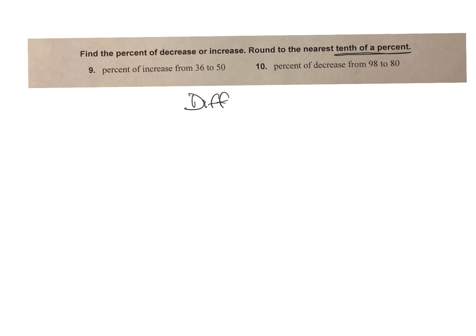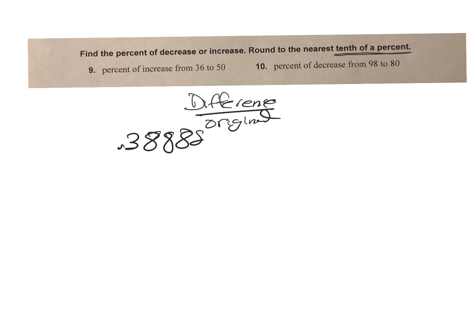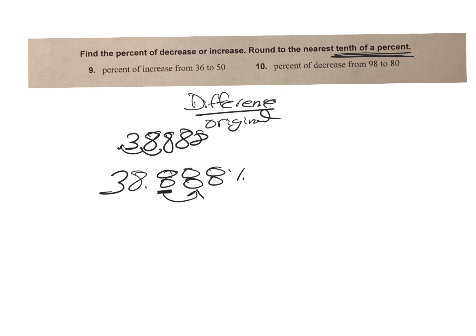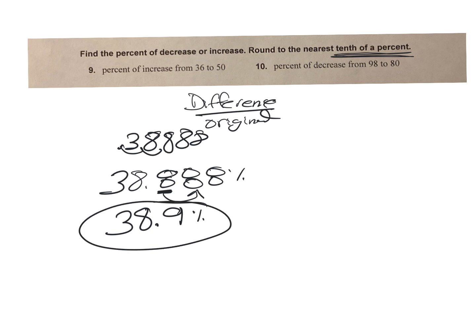We need to round to the tenth of a percent. Find the difference, divide that by the original. For number 9, it's going up, and the difference between 50 and 36 is 14, so I take 14 divided by 36 — that gets me 0.38888. I make this a percent: 38.888%. I need it to the tenth of a percent, so I look at the next digit — that's an 8 — and I round up to 38.9%. That's number 9.